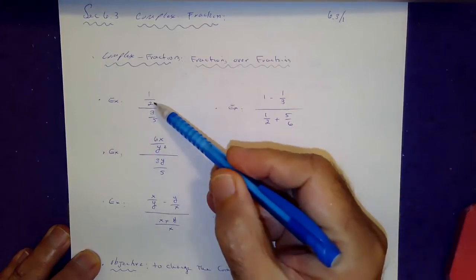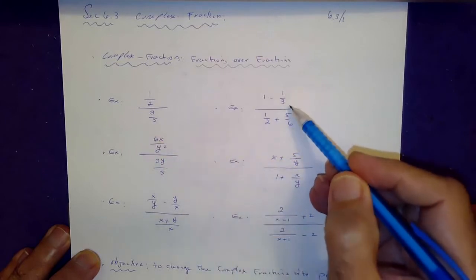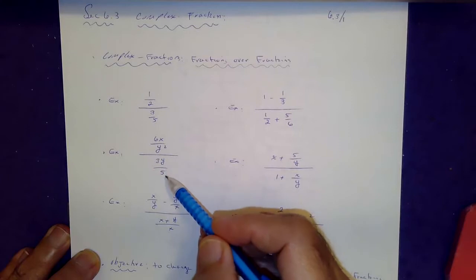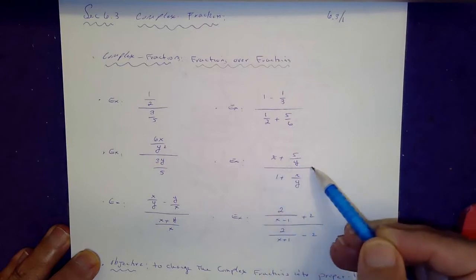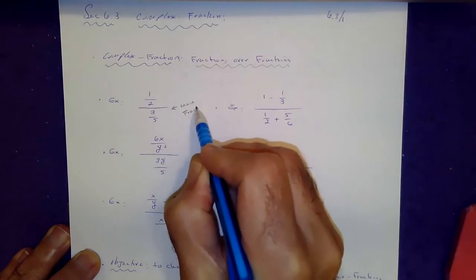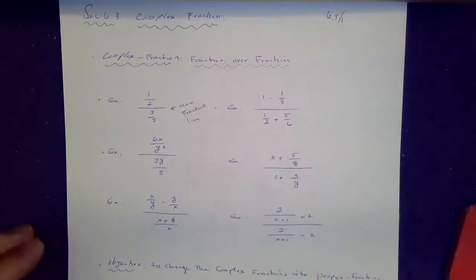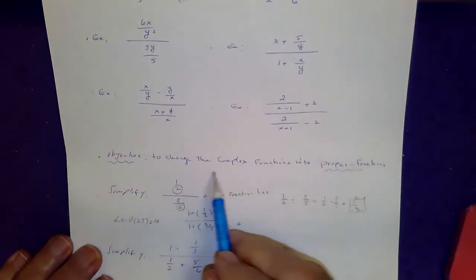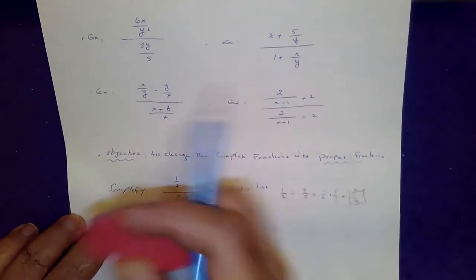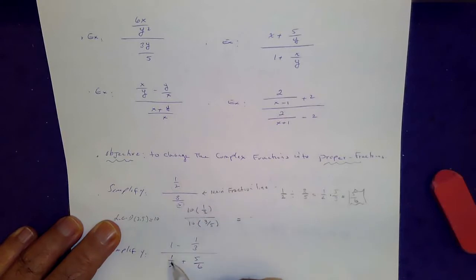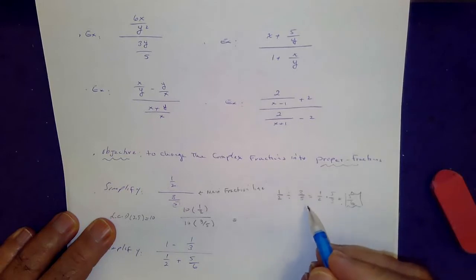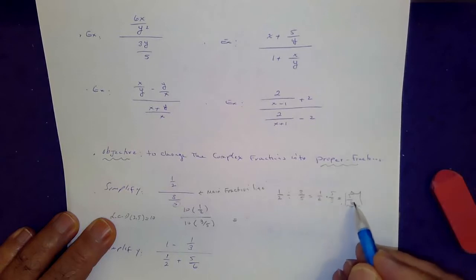How do you read these? 1 half divided by 3 fifths. 1 minus 1 third, divided by 1 half plus 5 over 6. 6x over y squared, divided by 3y over 5. x plus 5 over y, divided by 1 plus x over y. The usual way to do this is 1 half divided by 3 fifths, which is 1 half times 5 thirds, which happens to be 5 over 6.